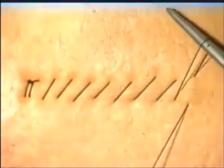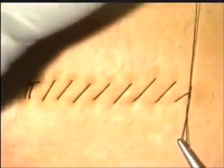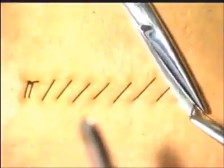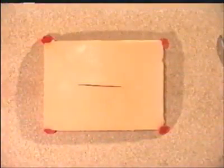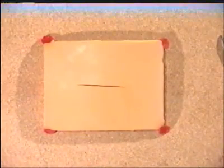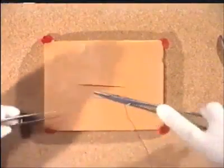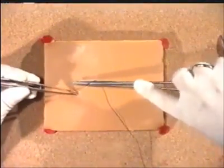After the final suture has been inserted, leave one loop long, and then ligate using a standard reef knot technique. Once this has been tied, you are in a position to cut both ends of the suture material. We will now demonstrate the essential role of the assistant in the insertion of a continuous suture. Start once again by inserting the initial suture, and ligating this using the reef knot technique.